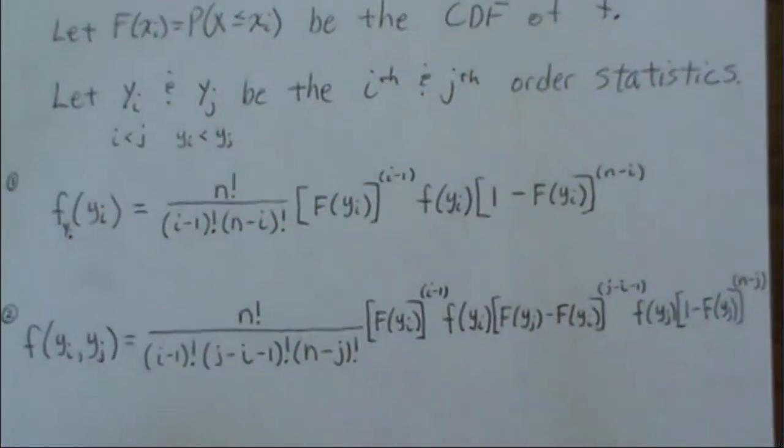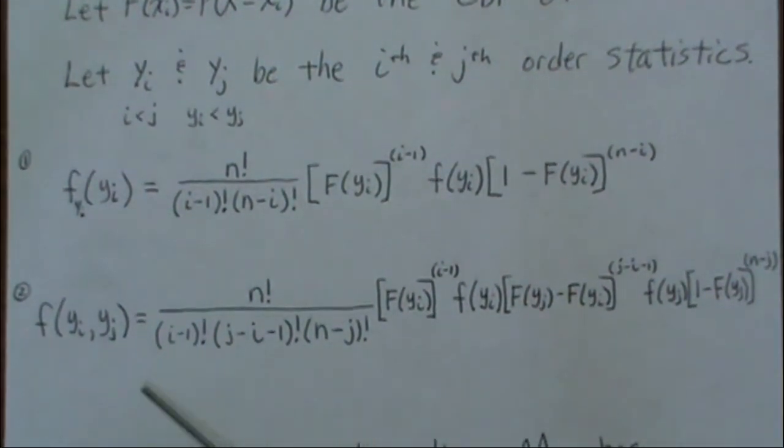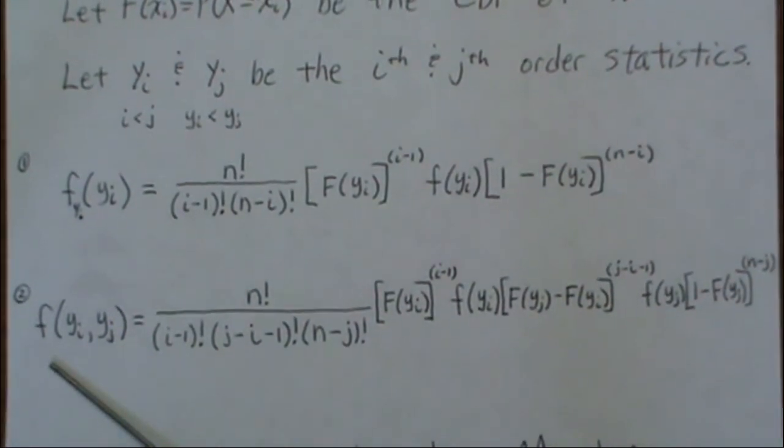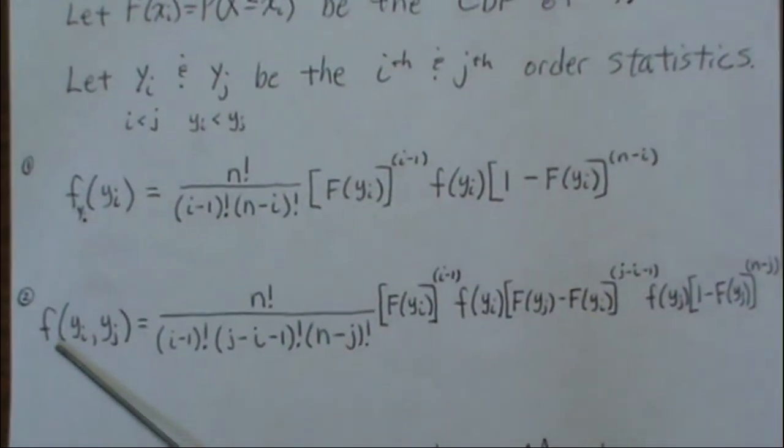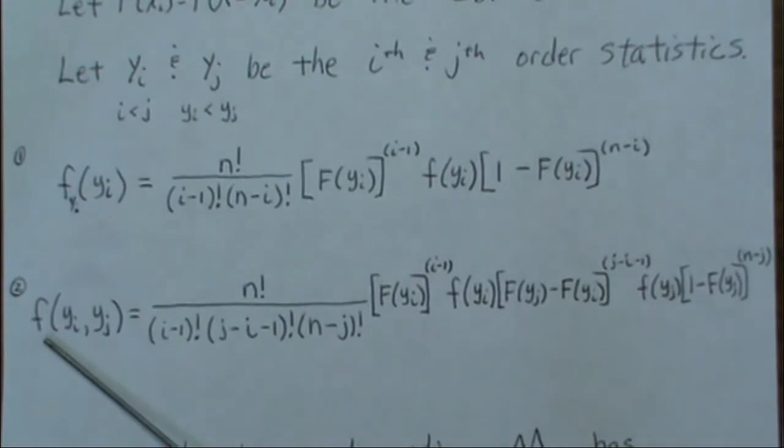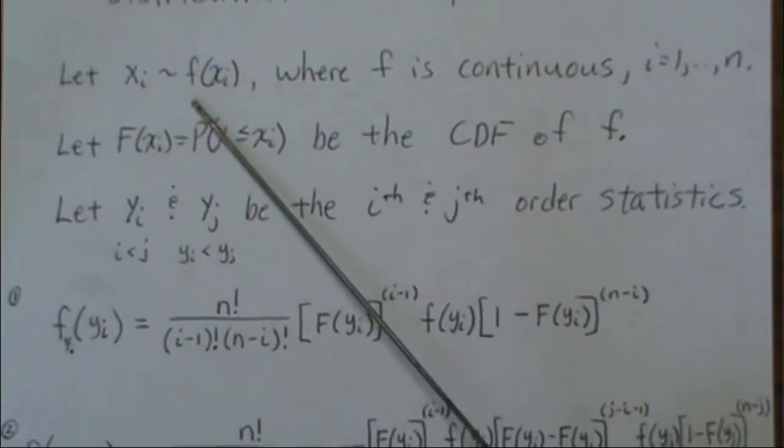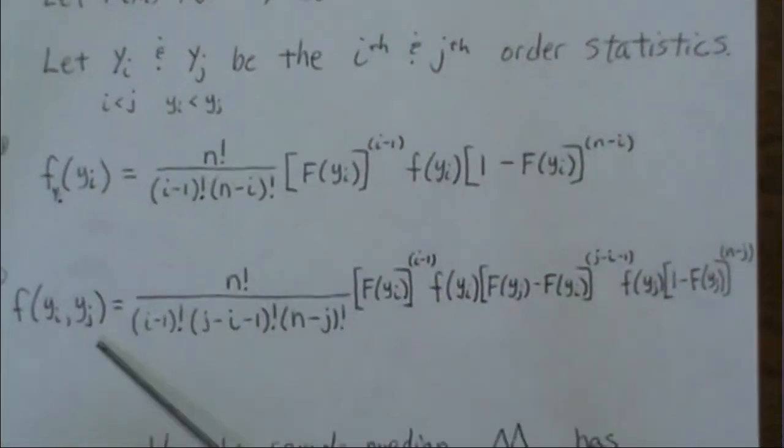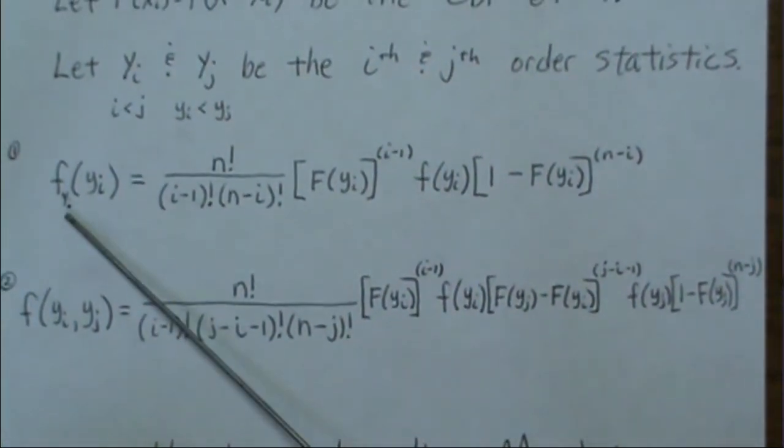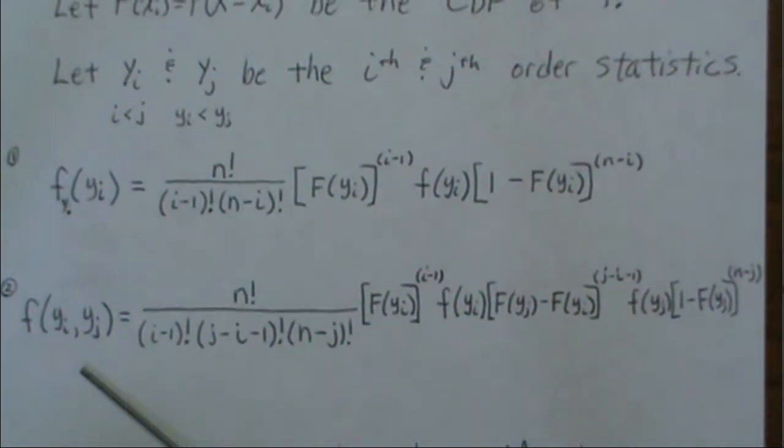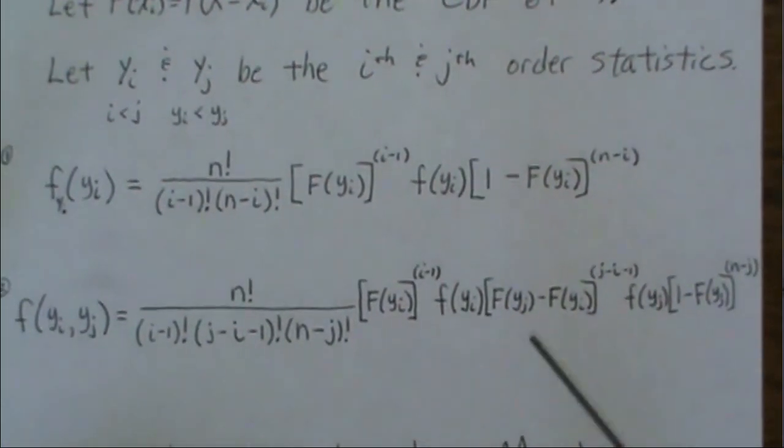And here, this is the joint density of Yi and Yj. And this f, probably it should have some subscripts Yi, Yj, because this f is not the same as the original f. So here I put a subscript there, I just forgot. So the joint density is this.